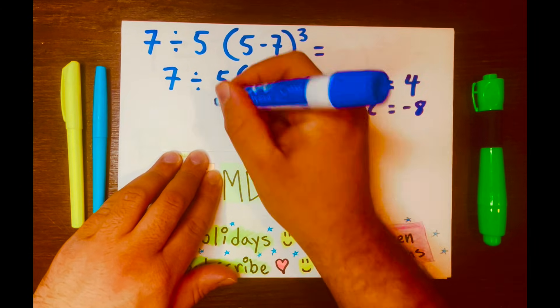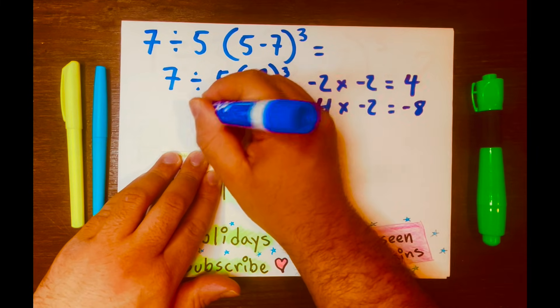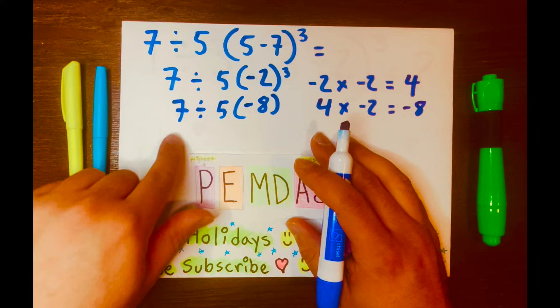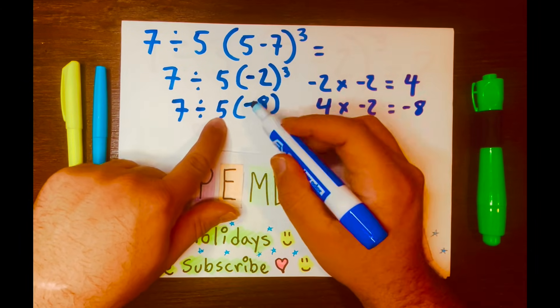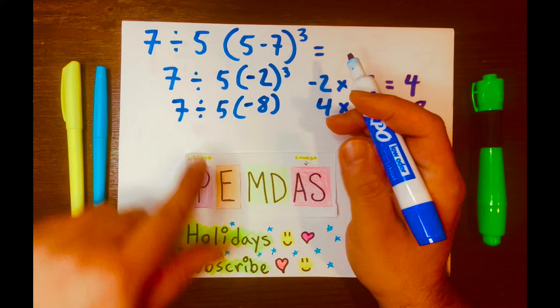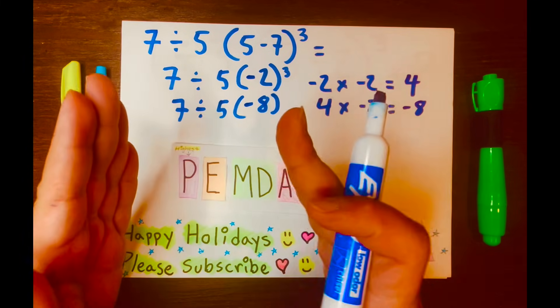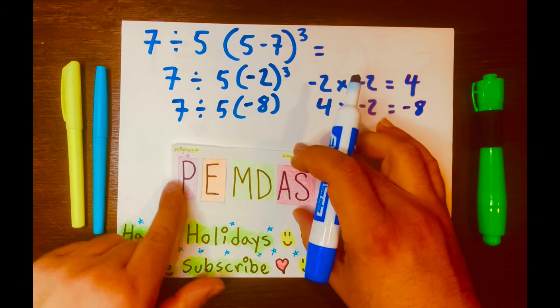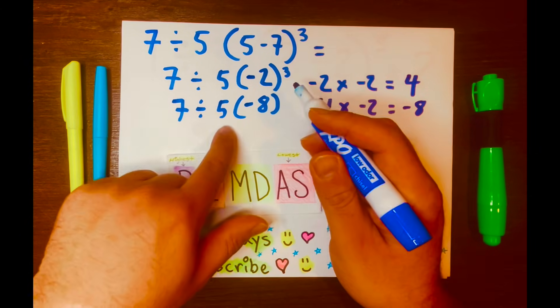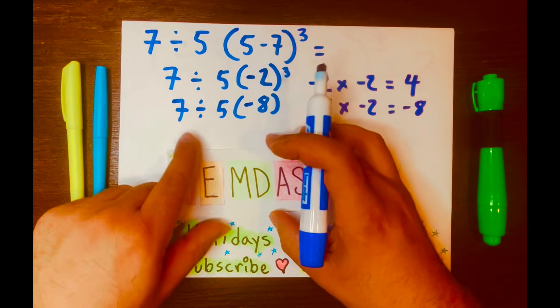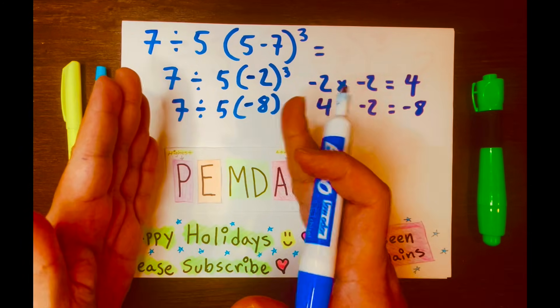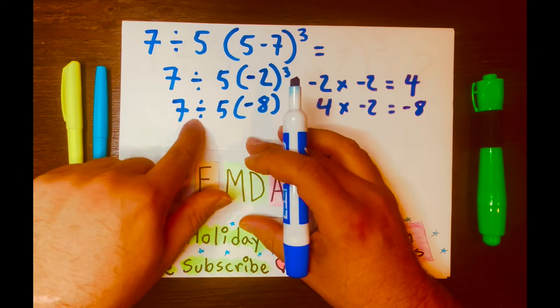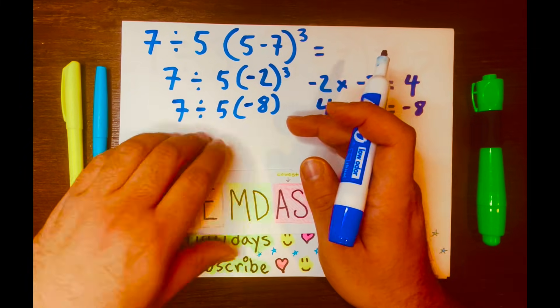Let's write negative 8 here. We're done with the exponent. Bring down the 5, the division symbol down, and the 7 down. Now, we have 7 divided by 5 times negative 8. Looking at PEMDAS, remember, we are solving the math problem from left to right according to the levels in PEMDAS. Division and multiplication are both within its own level, but we are solving the math problem from left to right. So, 7 divided by 5 will go first, not 5 times negative 8.